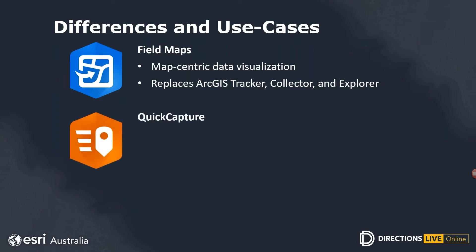Secondly, we have ArcGIS Quick Capture. This fits a specific niche that Field Maps or Survey123 do not — it is intended for quick data entry applications and is therefore button-centric. A common workflow would be two field agents driving around a survey area, with a passenger using Quick Capture on a mobile device to rapidly press large buttons for data collection, enabling you to collect data in a matter of a few seconds.